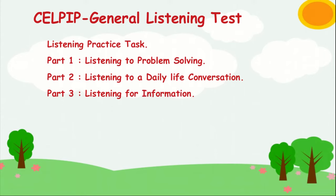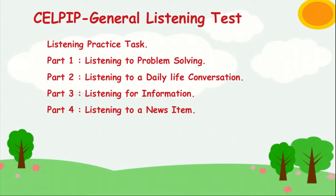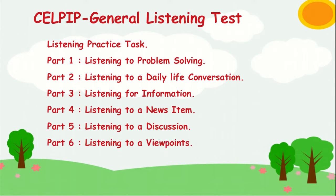Part 3 consists of a piece of information on any random subject, and you are asked related questions. Part 4 is just like Part 3 — you will hear audio with some news and answer a question based on the news. Part 5 is a video section where you will watch a video with a group of people discussing some issue. Part 6, listening to viewpoints, will play audio for you on different viewpoints about random subjects or news.